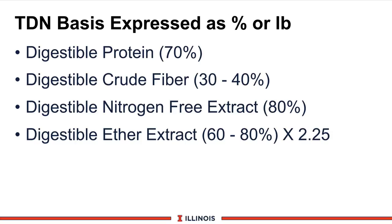Digestible crude fiber is a very low number because of the digestibility of non-digestible lignin fractions — about 30% to 40%. Digestible nitrogen-free extract is about 80%. Nitrogen-free extract really is sugars and starches, so it's very highly digestible — pigs, chickens, and humans can handle this nicely. The fourth component is digestible ether extract, which is your fats and oils, at about 60% to 80%. Note: multiply by 2.25, because fat is two and a quarter times more calorically dense based on its carbon content.